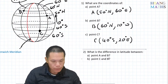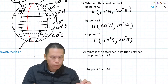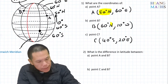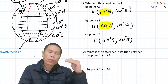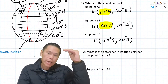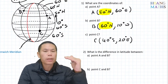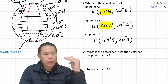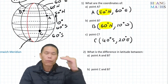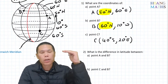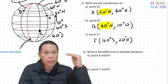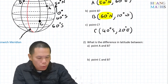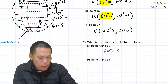Second question: what is the difference in latitude between A and B? For A the latitude is 50 degrees north and for B it is 60 degrees north. Because both points are above the equator, we subtract: 60 minus 50 equals 10 degrees. You can think of it as starting from 50 north, then another 10 degrees north to reach 60. The difference is 10 degrees.